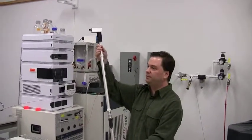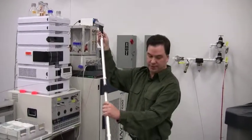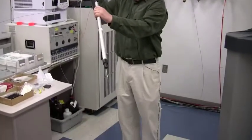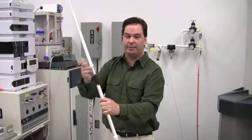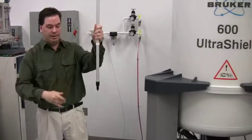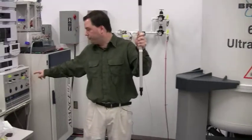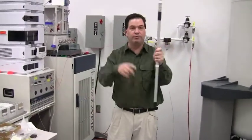As you can see, this accessory contains a flow cell in it. We put this accessory in the top of the magnet, and then we are able to flow directly from the HPLC right to the NMR.